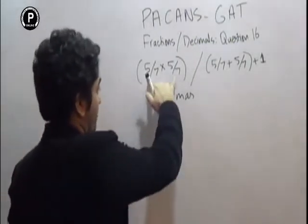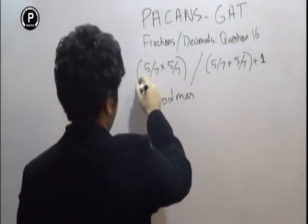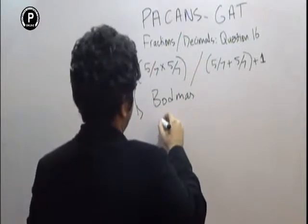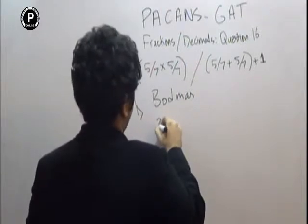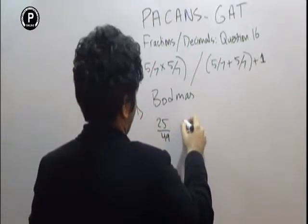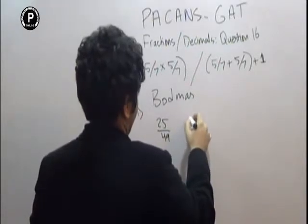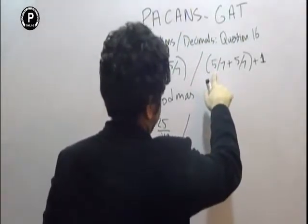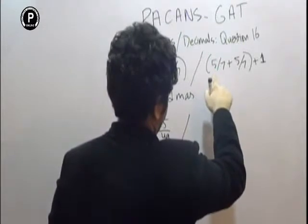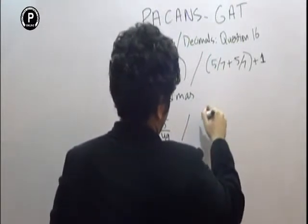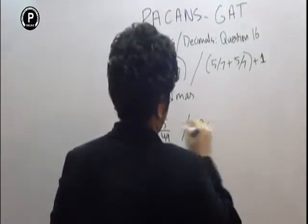So we are going to solve the brackets first, which is going to be 5 over 7 times 5 over 7, which is 25 over 49. And it is going to be divided by 5, that is going to be 10 over 7.